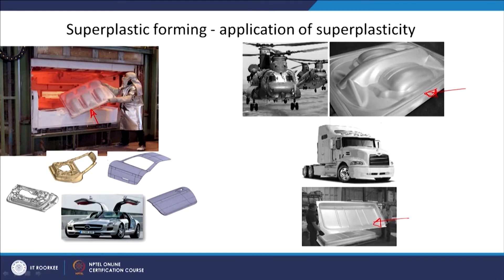You keep the material in a furnace, apply the gas pressure, and whatever is the die shape on the other side, you can get that shape. You can form very complex geometries — as you can see, a very complex shape can be made in only one cycle. If you were to use conventional fabrication methods, all the parts would have to be made separately and joined using welding or riveting. In one shot you can get a very complex shape through superplastic forming.